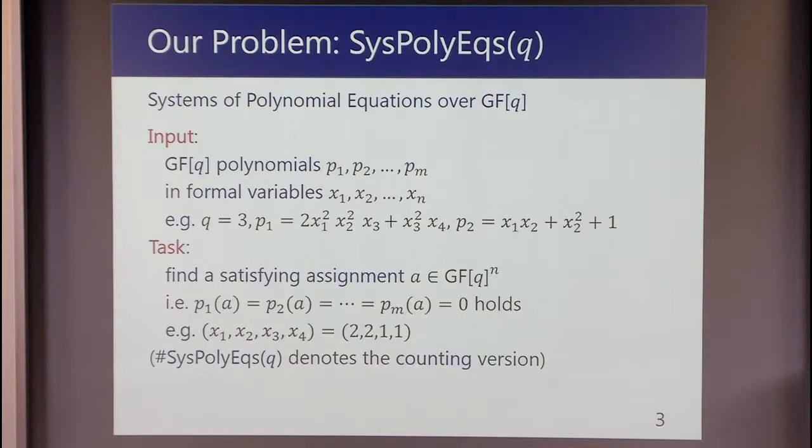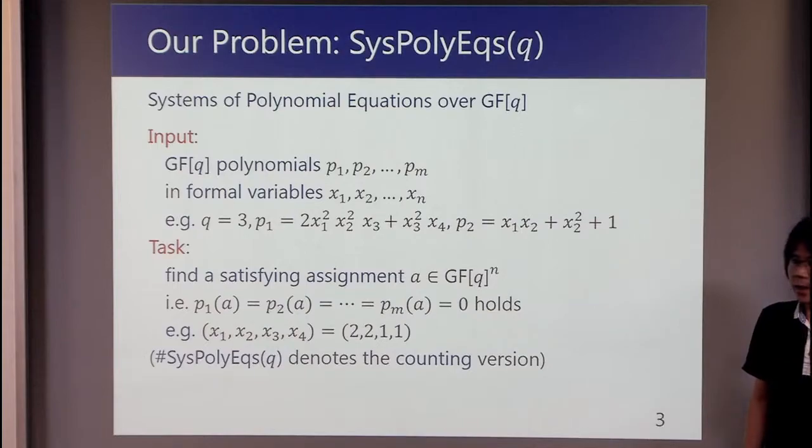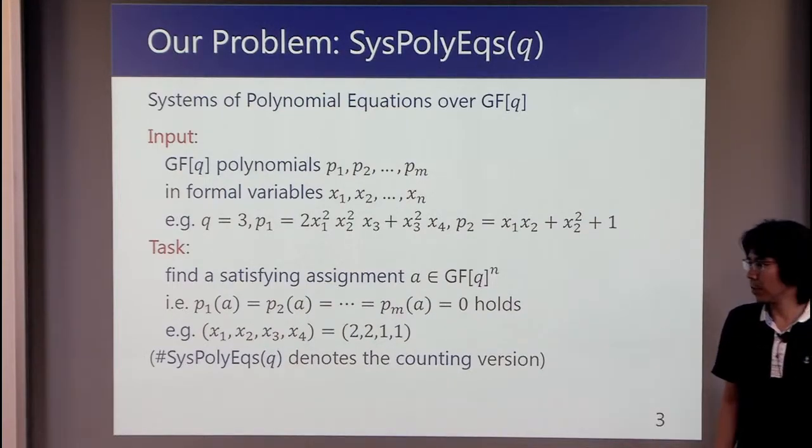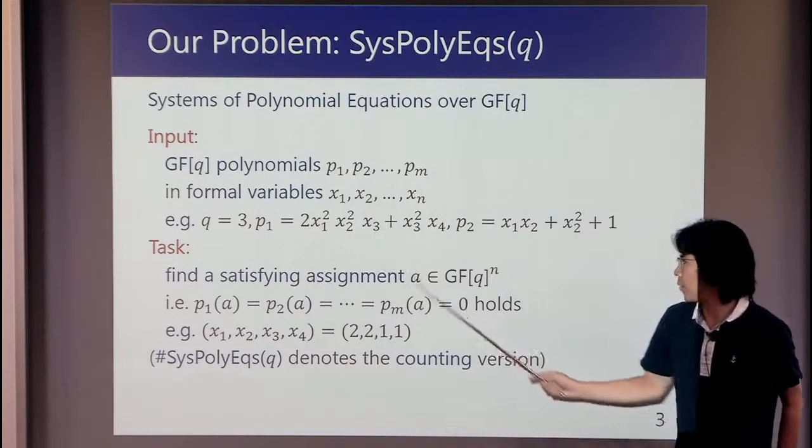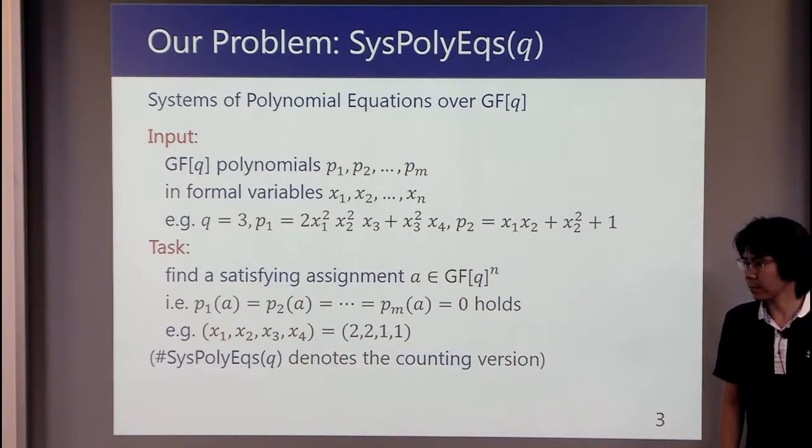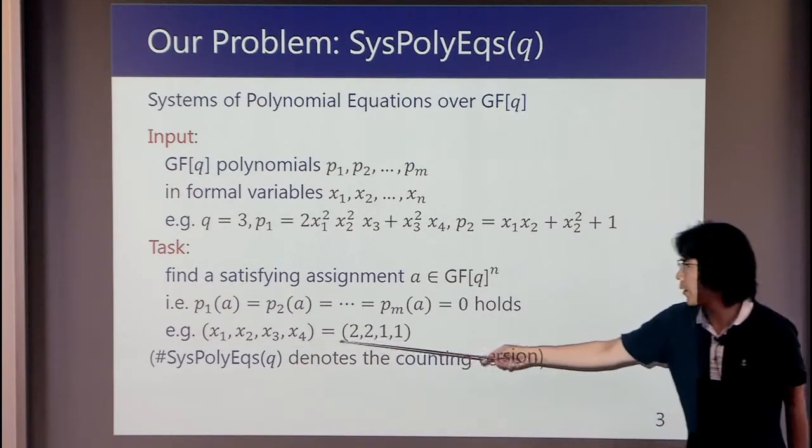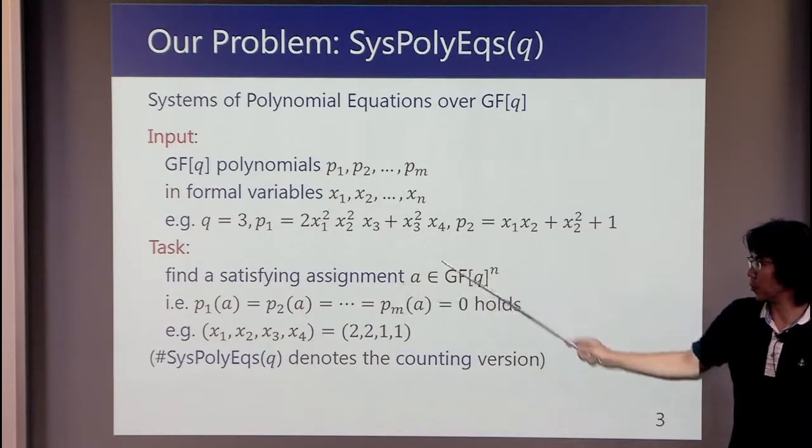Our task is to find a satisfying assignment a, that is an assignment that makes all the polynomials zero. And in this case, this assignment satisfies all the polynomials, as you can see.